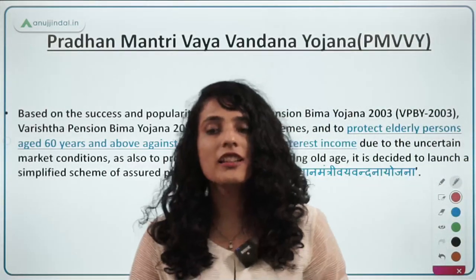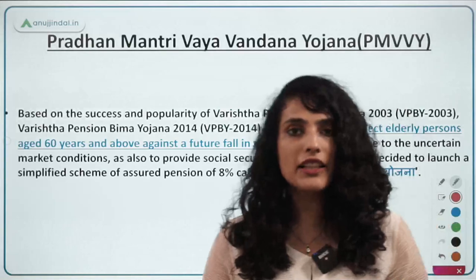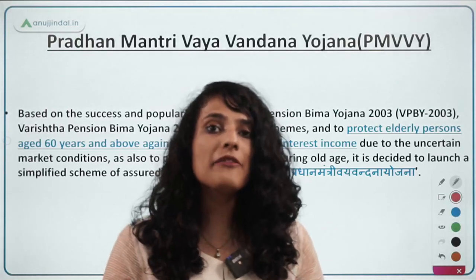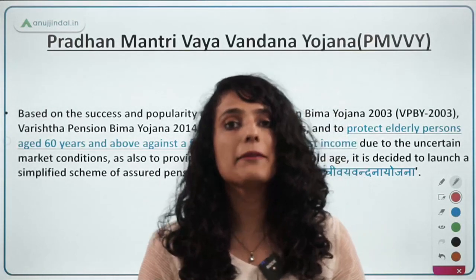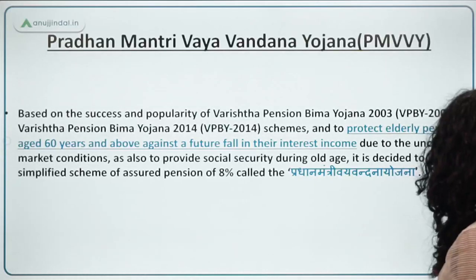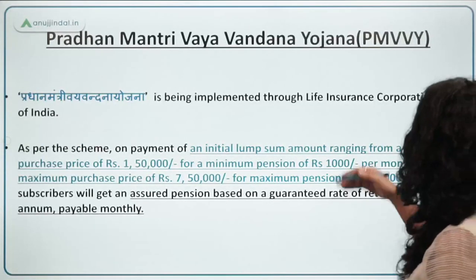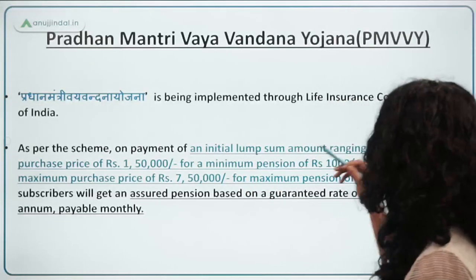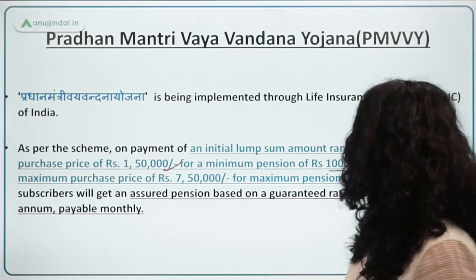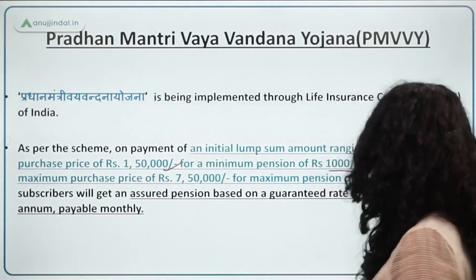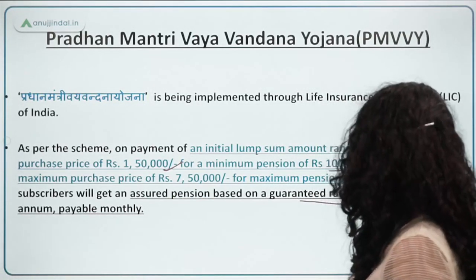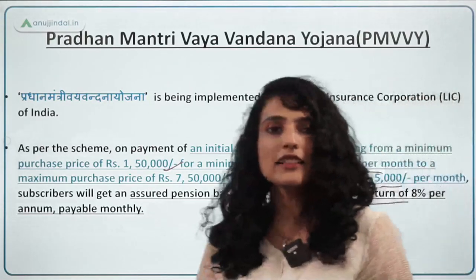Pradhan Mantri Vaya Vandana Yojana is inspired by the Pradhan Mantri Varishtha Pension Yojana. Under this scheme, the initial lump sum amount ranges from a minimum of rupees 1.5 lakh with a pension of rupees 1,000 per month to a maximum amount yielding rupees 5,000 per month. Subscribers will get an assured pension based on a guaranteed rate of return of 8% per annum, payable monthly.